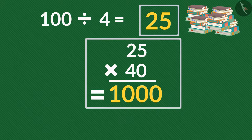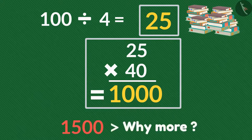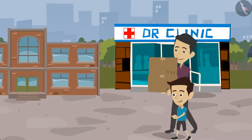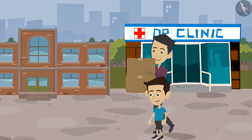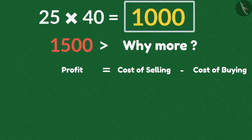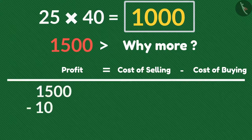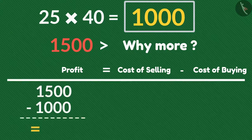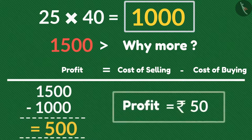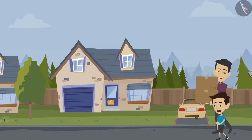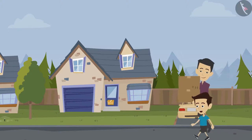But dad, 25 books cost 1000 rupees and we are taking 1500 rupees from uncle. Yes son, this is the profit. When we buy an item at a lesser price and sell it at a higher price, we will get a profit. If we sell the books costing 1000 rupees for 1500 rupees, then our profit is rupees 500. Oh wow dad, this is very interesting!